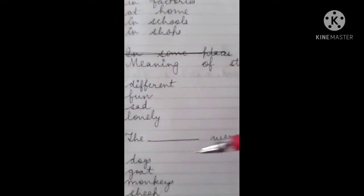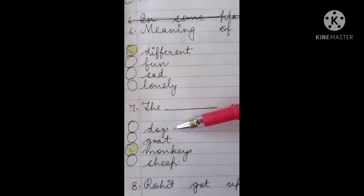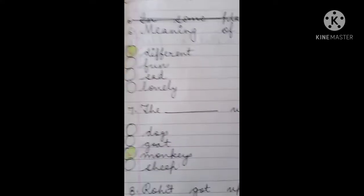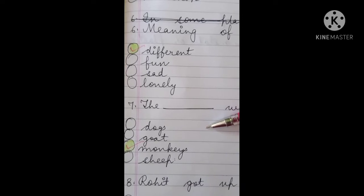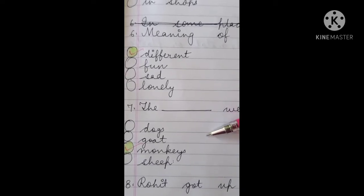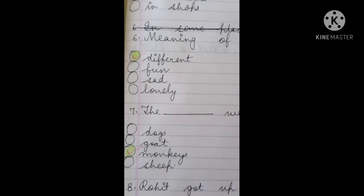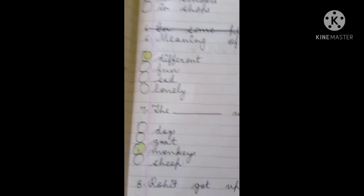The dash was swimming in the pool. The options are dogs, goat, monkeys, sheep. Here the chapter being spoken about is strange zoo. So in the strange zoo, who were swimming in the pool? The monkeys. Yes children.